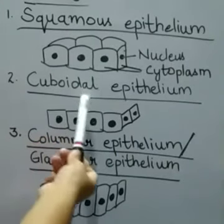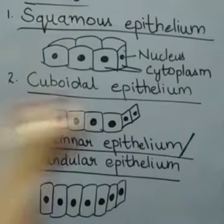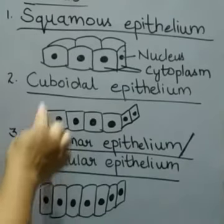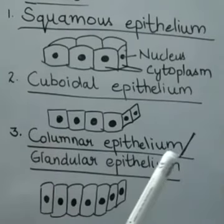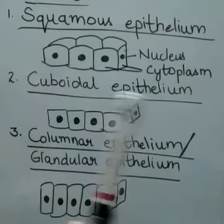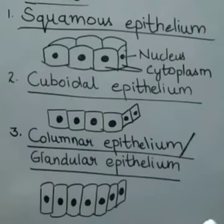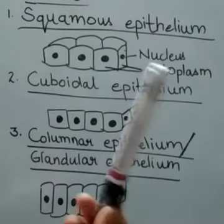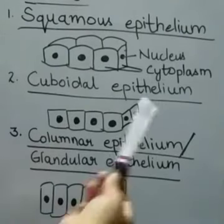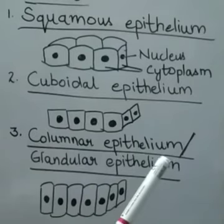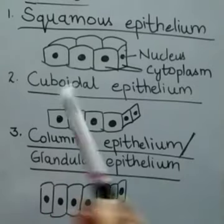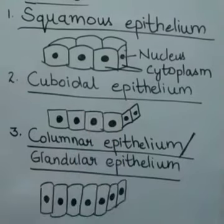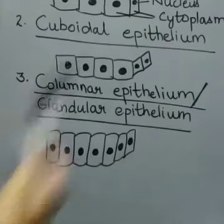The second type is cuboidal epithelium. Just like the name, these are cuboidal in shape. They are found in kidney tubules, thyroid vesicles, and in glands like salivary glands, sweat glands, and exocrine pancreas. It also forms the germinal epithelium of gonads like testes and ovaries. Their function is to absorb, excrete, secrete, and provide mechanical strength.